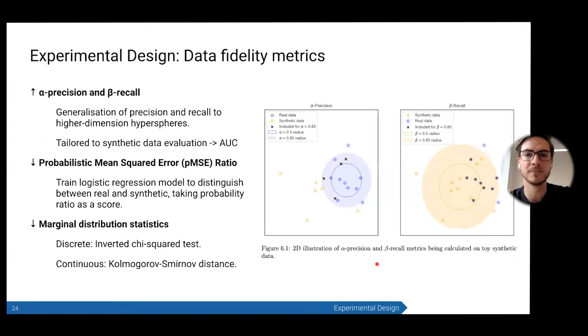Finally, our data fidelity metrics. We use these really good alpha precision and beta recall metrics that have been recently developed. The goal here is to maximize these. These are a generalization of precision and recall from classification problems, but you apply them to higher dimensions and you tailor them to synthetic data evaluation. Essentially, you're drawing hyperspheres around the real and around the synthetic data and counting how much the other dataset falls within that distribution. When you integrate over those, get the area under the curve, combine them together, you get a really nice metric that measures fidelity of the joint distribution. Another way we can measure that is to train a logistic regression model to distinguish the real and synthetic data and use the probability ratio to score. That's something you want to minimize. You've also got to look at the marginal distributions. Here you can just use pretty standard statistical tests on the different features and aggregate those together.